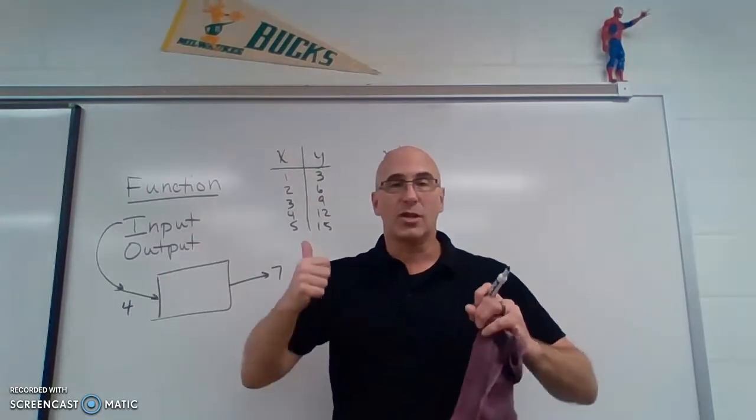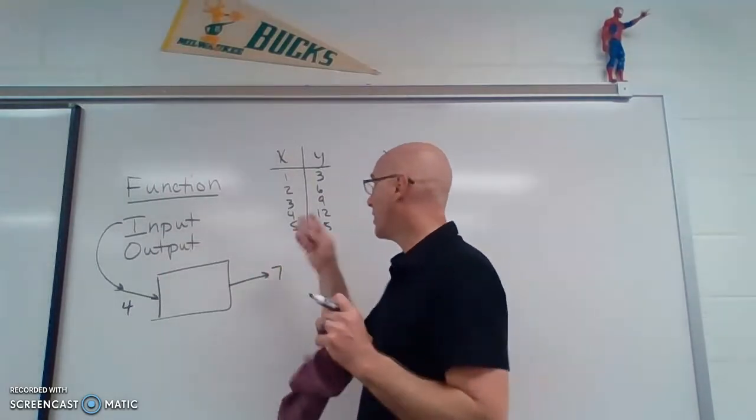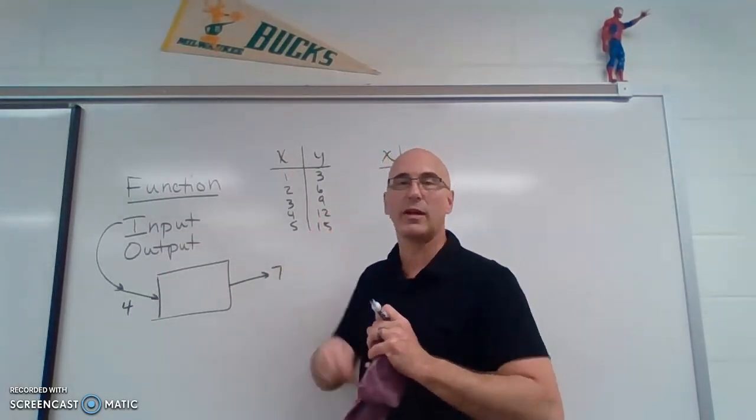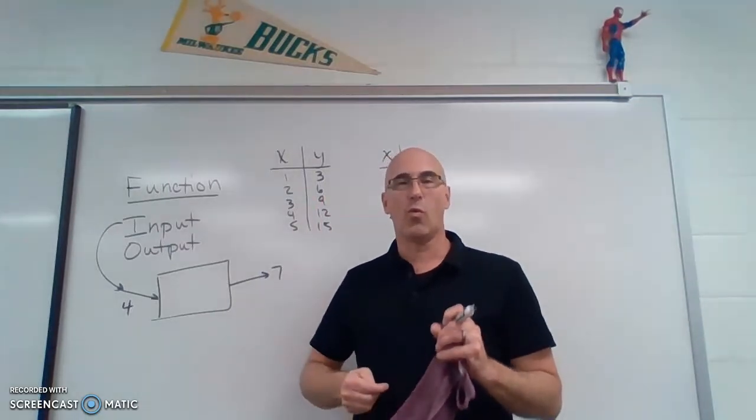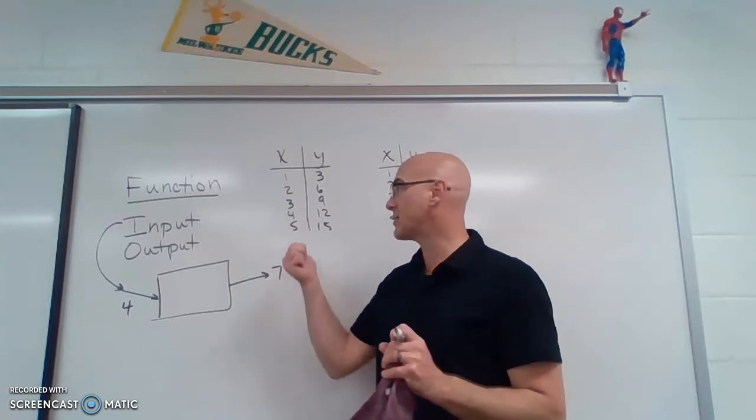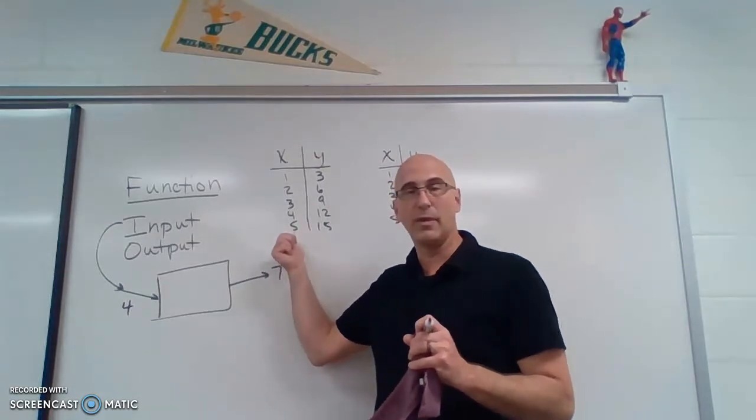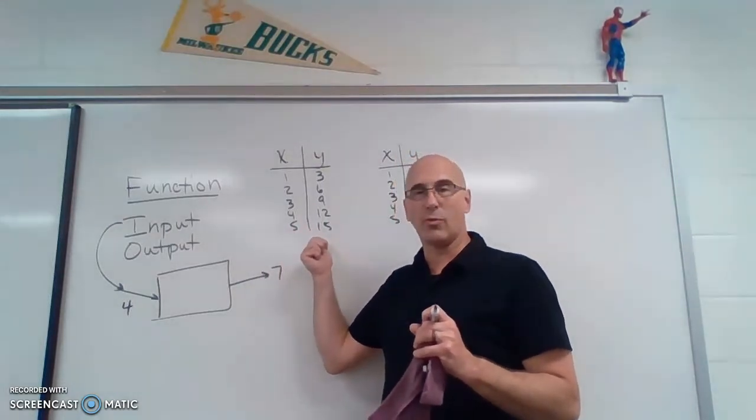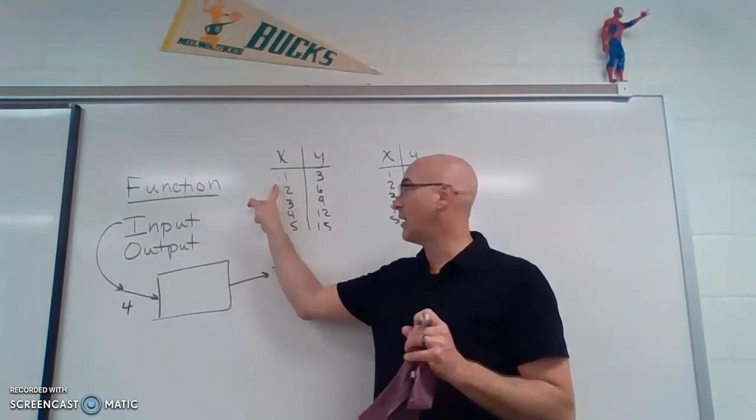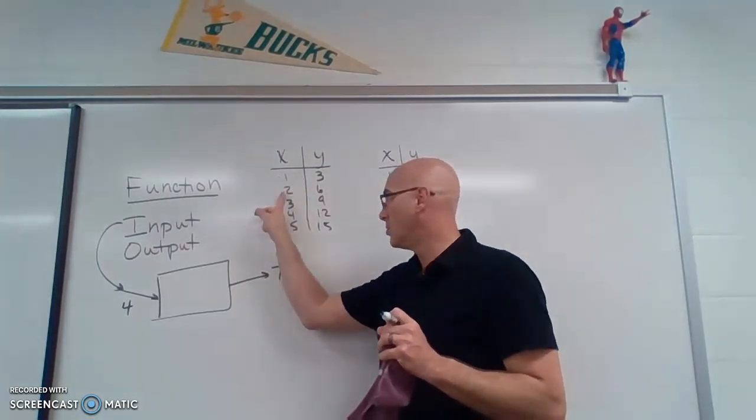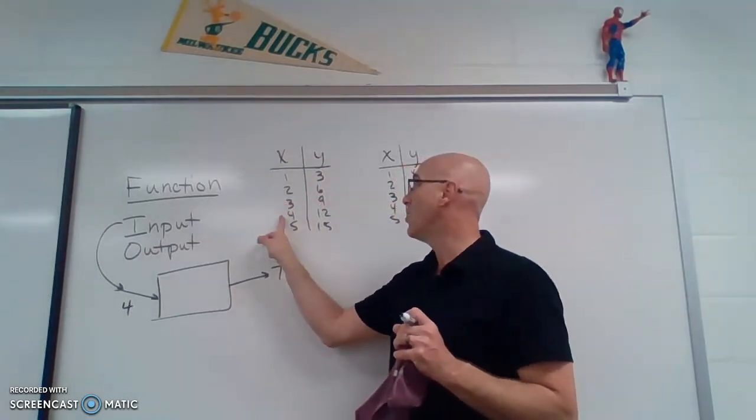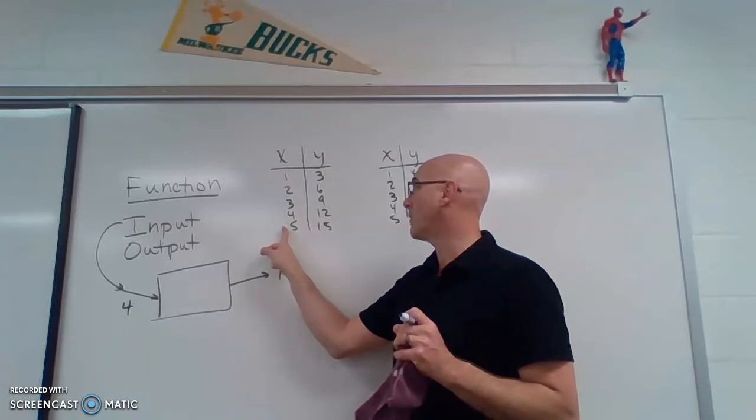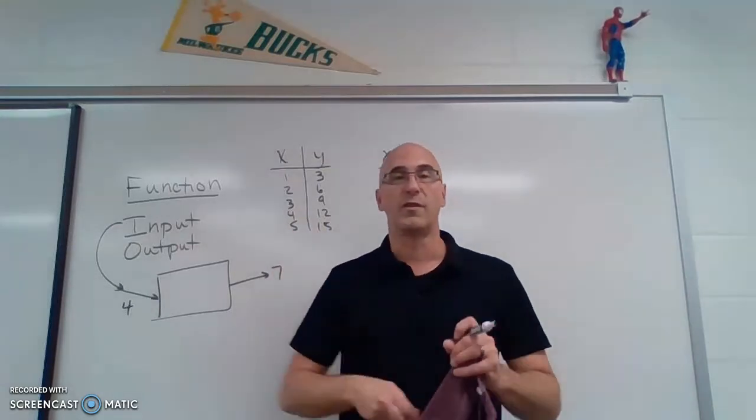So we can look at a function with tables. So I drew a t-chart right here. So I have one column x and one column y. The x is my input and my y is my output. So when I put the number 1 in, I'm going to get a 3 out. 2, I get a 6. 3 gives me 9. 4 gives me 12. And 5 gives me 15.